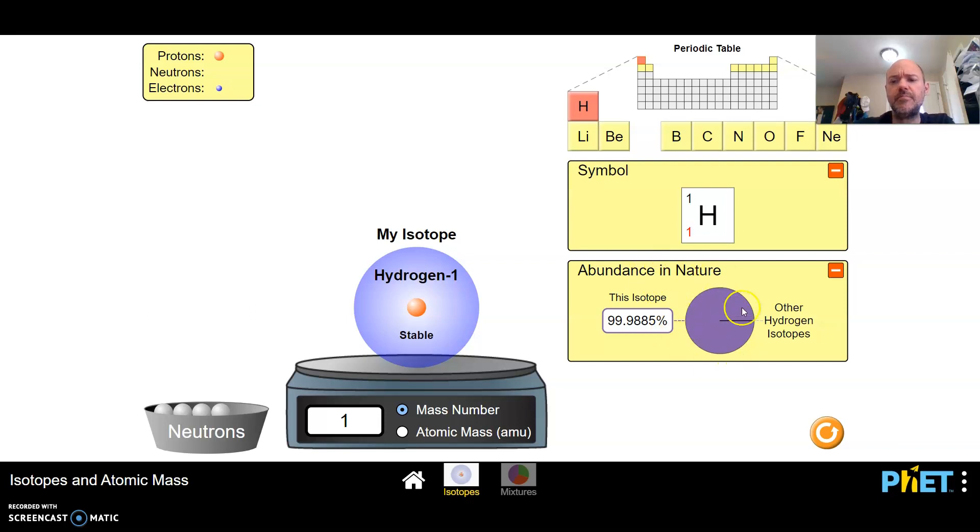And then this pie graph down here shows you the abundance of this isotope. So you see that 99.9885% of hydrogen isotopes are hydrogen one.